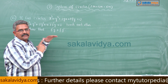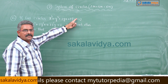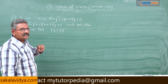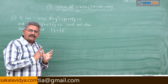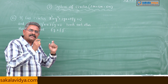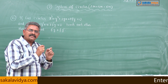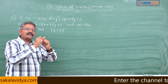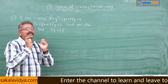If you observe this problem, the constant term is absent in both circles. Since the constant terms are absent, these two circles pass through the origin. That means they touch each other at the origin, so the point of contact is the origin.